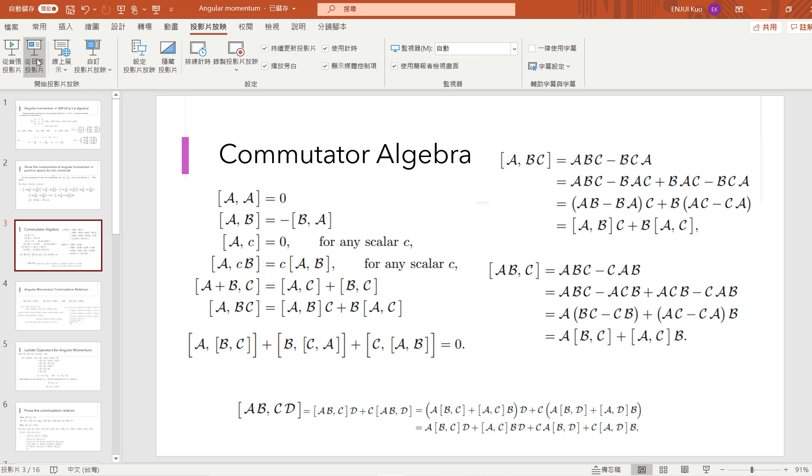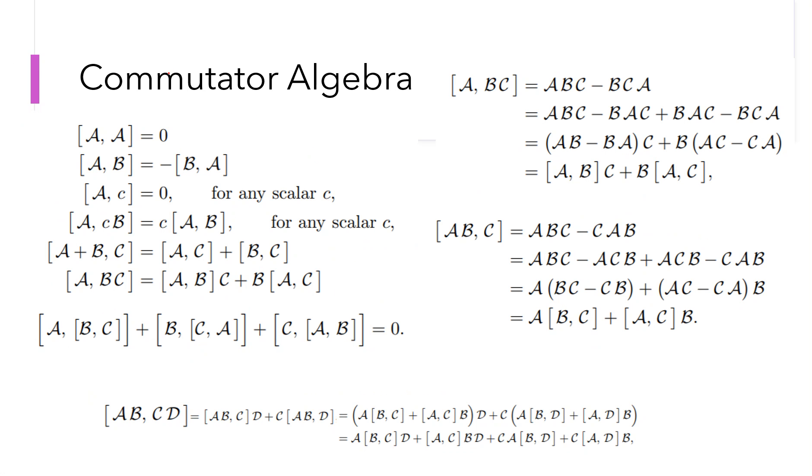So to today's video, I'm going to quickly introduce this commutator algebra and prove all these properties. So you can view that if somebody gives you A, B, then the commutator of A, B is defined by A B minus B A.